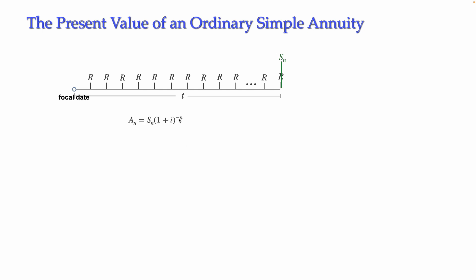So we use S_n as the future value. The present value will be equal to S_n multiplied by (1 + i) to the power negative n. To compute the present value of an annuity, it is enough to compute the present value of the future value S_n. However, we would like to simplify this, because having the formula this way means you need to compute the future value first and then multiply by (1 + i) to the power negative n.